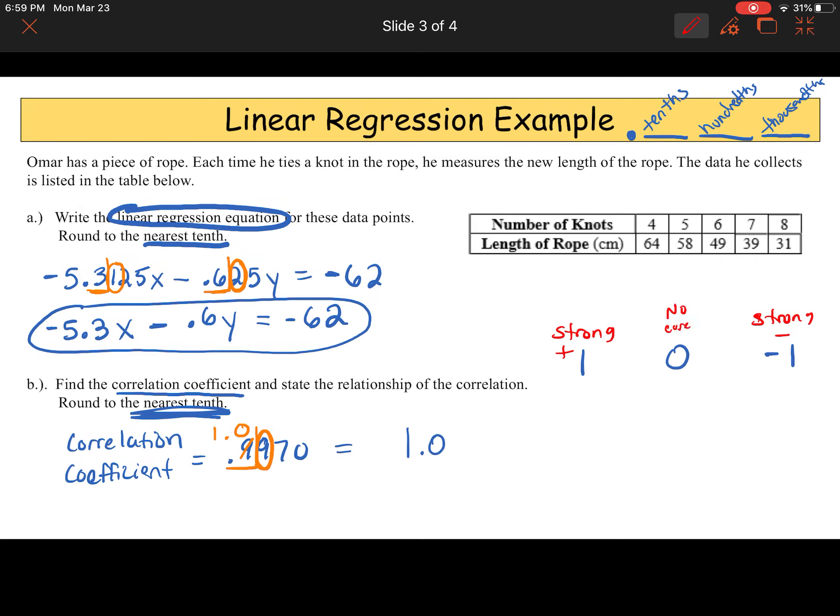So, remember, we have 1, 0, negative 1. So, this is a strong positive correlation and strong negative correlation. If we have, if you ever get 0, this is no correlation. Anything in between could be closer to a strong, or as we get closer to 0, we turn into weak. So, weak positive, weak negative. So, since we are at 1, we have a strong, positive correlation. And that's my answer.